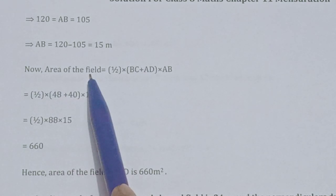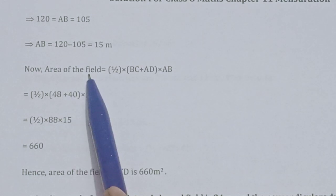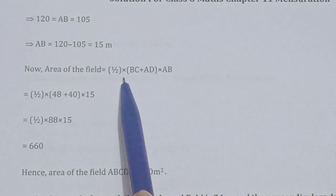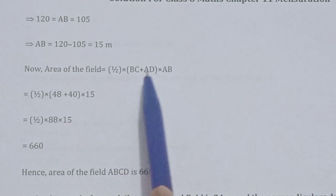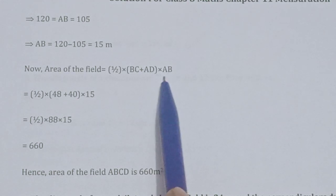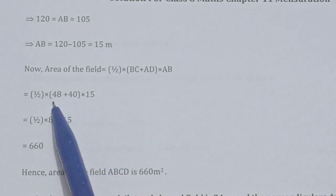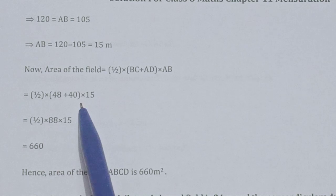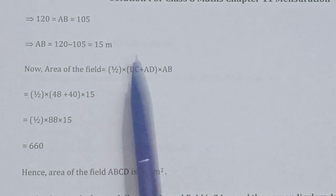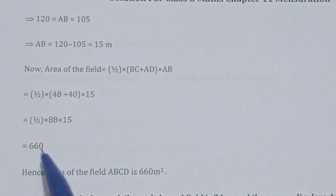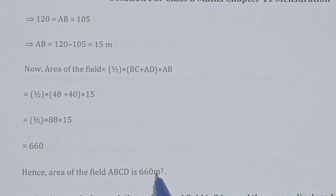Now we find the area of the field. The area of a trapezium is half into the sum of its parallel sides into the perpendicular distance between them. So: half into (BC plus AD) into AB equals half into (48 plus 40) into 15, which gives 660. Hence the area of field ABCD is 660 meter square.